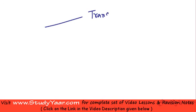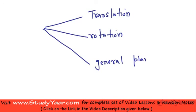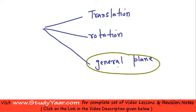Now, this plane motion can be of three types. It could be a translatory motion, or translation. It could be rotation about a fixed axis. Or it could be a general plane motion — a motion which is neither a rotation about a fixed axis nor a translation.